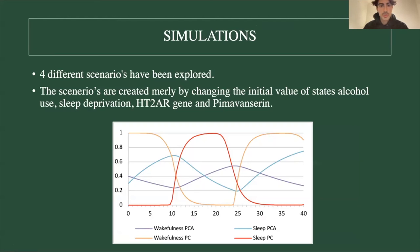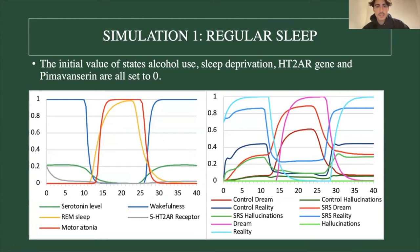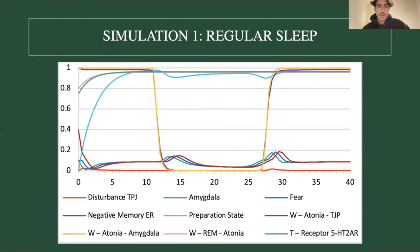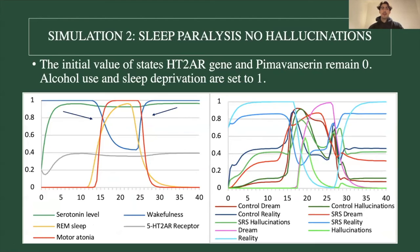Four scenarios are explored with this model. The scenarios are created by changing the initial values of four states: alcohol use, sleep deprivation, the HT2R gene, and pimavanserin. In the first scenario, all of these are set to zero. The result shows no overlap between wakefulness and motor atonia — so we are not speaking of sleep paralysis — and hallucinations do not play a part. Dreams and reality simply alternate.